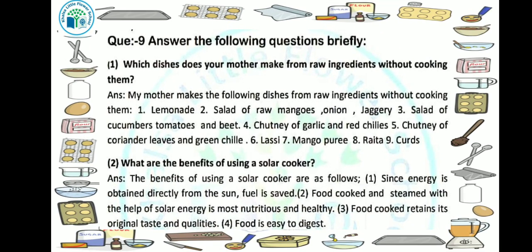Now let's see the brief question answers. First question: which dishes does your mother make from raw ingredients without cooking them? My mother makes dishes like lemonade, salad of raw mangoes with onion and jaggery, salad of cucumbers, tomato and beet, chutney of garlic and red chilies, chutney of coriander leaves and green chilies, lassi, mango puree, raita and curds — all these dishes can be made just by adding ingredients, without cooking.